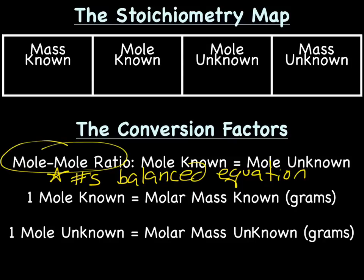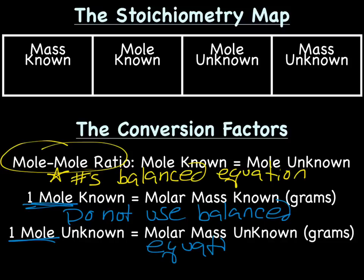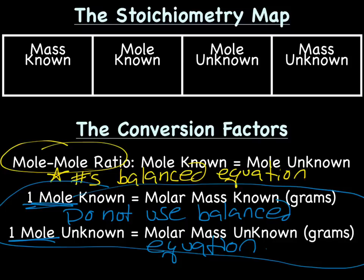The other possible conversion factors are: one mole of the known equals the molar mass of the known in grams — calculated from the periodic table — or one mole of the unknown equals the molar mass of the unknown in grams. Note it says one mole — really, really important. Do not use the balanced equation for the molar mass conversion. You use one mole, because it's true that one mole of a particular atom or molecule weighs its molar mass in grams. Two, three, four, or more moles does not equal the molar mass from the periodic table. So: mole-mole ratio — use the balanced equation. One mole equals molar mass — do not use the balanced equation.